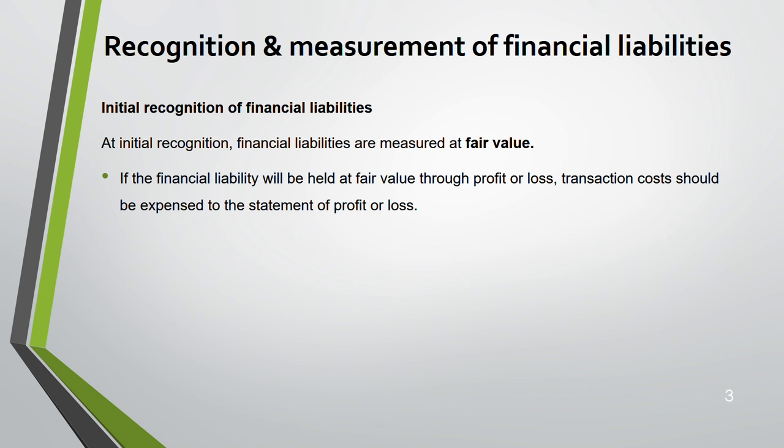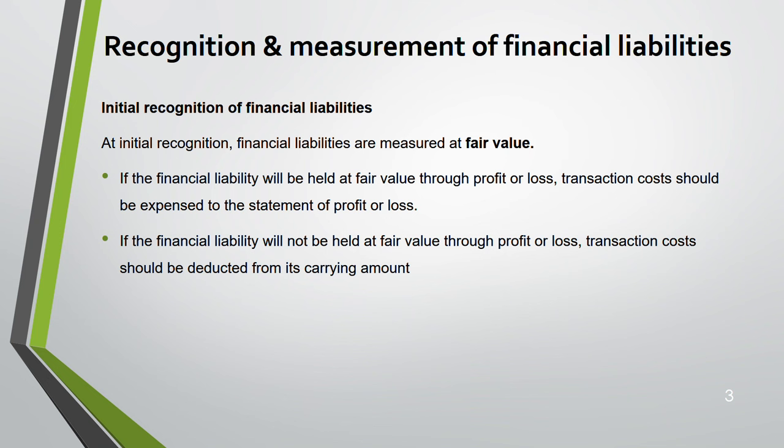If the financial liability will be held at fair value through profit and loss, then the transaction cost will be expensed in the statement of profit and loss. If the financial liability will not be held at fair value through profit and loss, the transaction costs are deducted from the carrying amount of the financial liability. If you don't understand this now, don't worry — once we do a question with numbers, come back and reread this slide and it will make more sense.